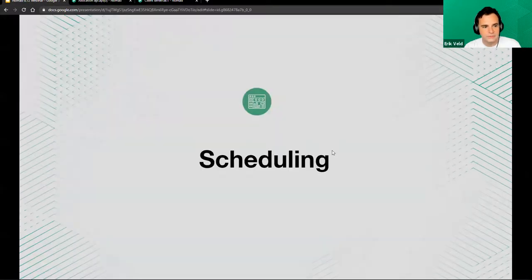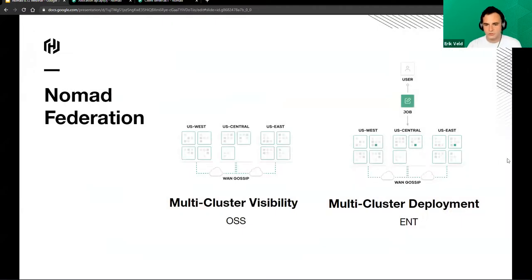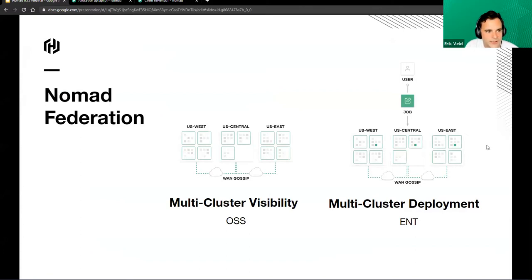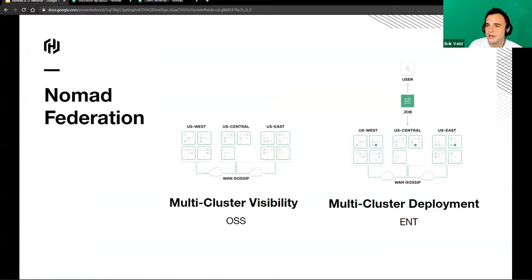While we wait for state to converge, I'd like to head over to another scheduling feature. We already had multi-cluster visibility in Nomad where you could query other regions for their jobs or submit a job to a certain region. But now you can actually deploy a job simultaneously to multiple different clusters. To showcase that, I'd like to welcome on video my colleague Tim Gross to show us that feature.